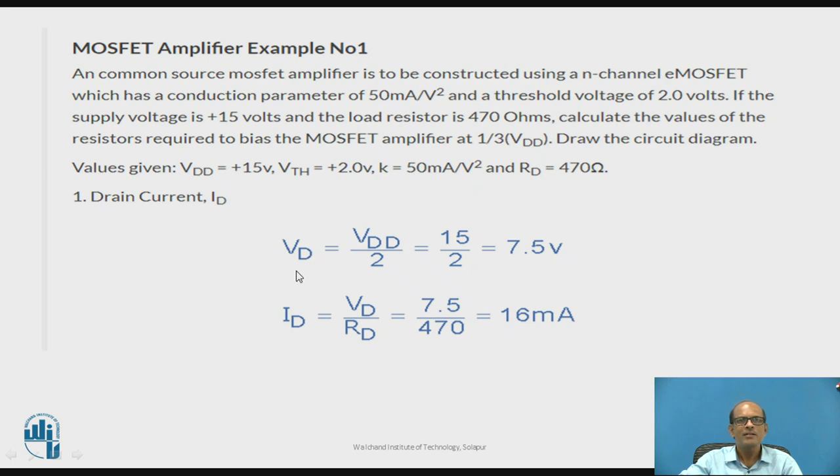Drain current: voltage at drain is taken VDD by 2, so 15 by 2, that is 7.5 volt. Then drain current is given by Vd by Rd, so 7.5 divided by 470 ohm, and from that we calculate drain current as 16 milliampere.